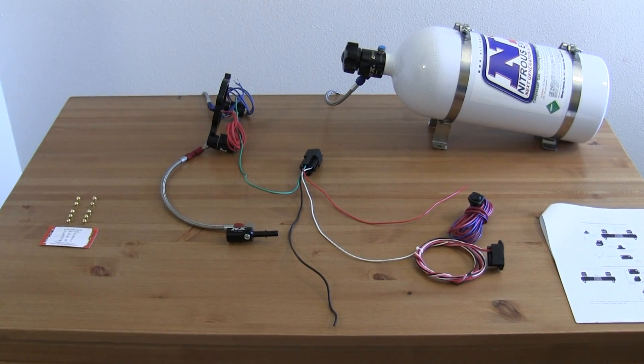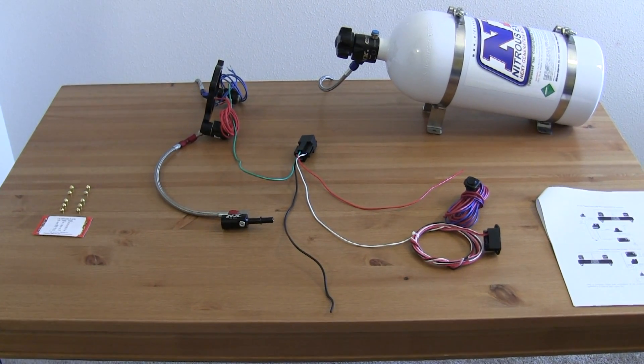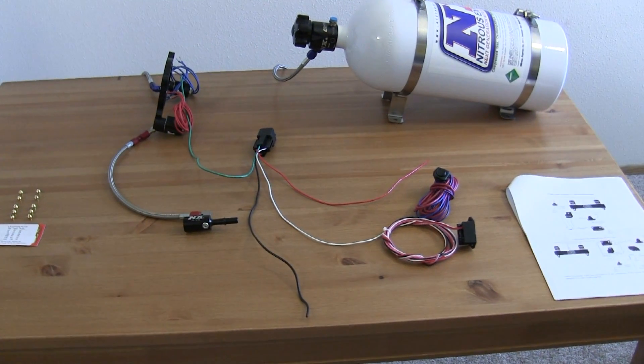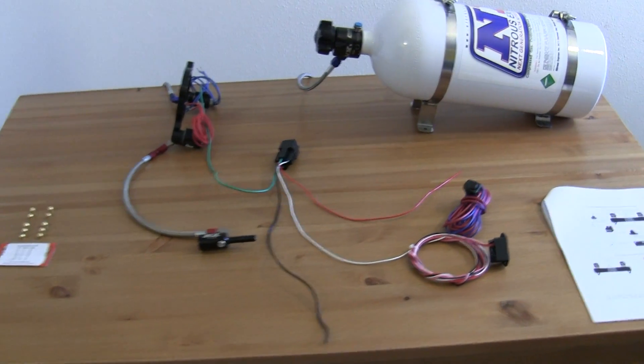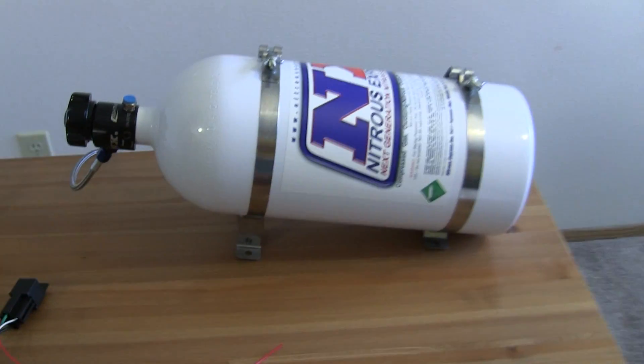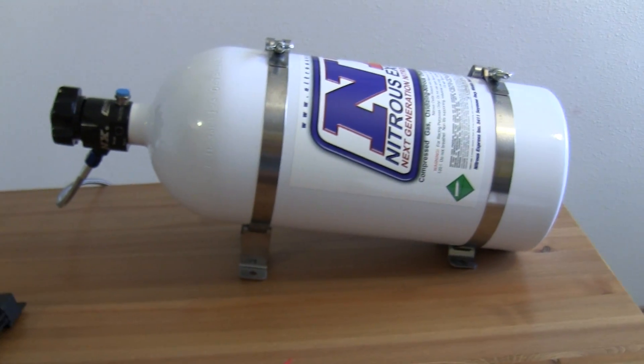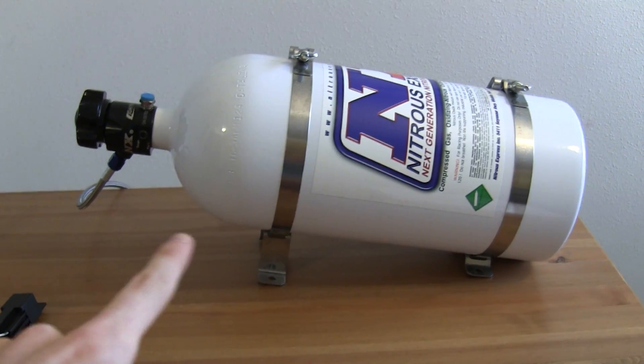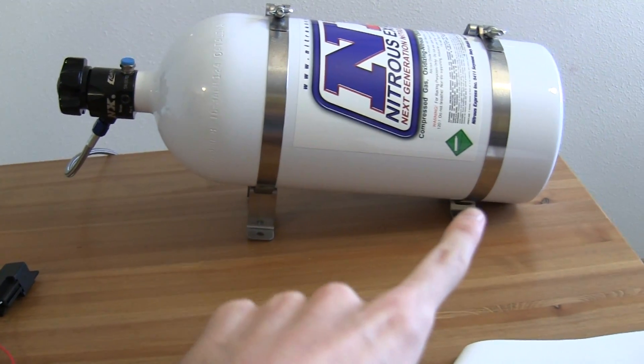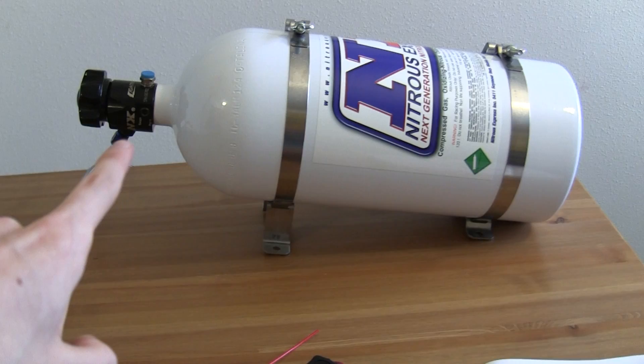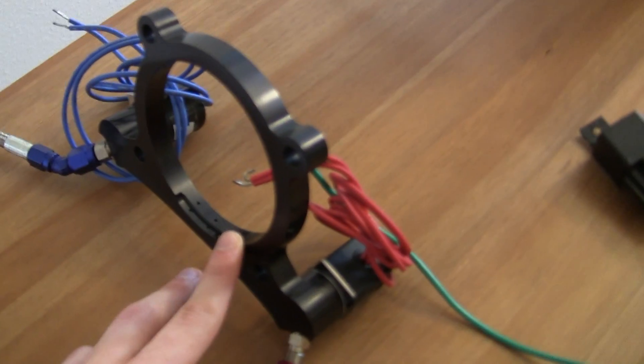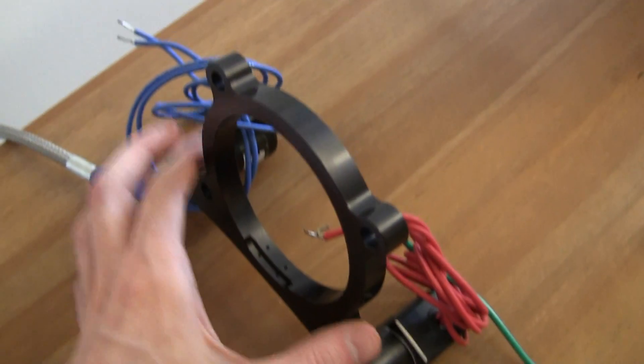So here we have our full nitrous kit, and we're just going to start at the bottle and work our way up and just check out the different components, see how they all work together to increase horsepower. So starting with the bottle, you're going to have these mounts, and it's going to be mounted somewhere in your car, as I've shown here, with the bottom of the bottle lower than the top, reason being there's a siphon down here, which is going to be pulling the liquid nitrous and sending it to this line, which will then come to your plate sandwiched between the throttle body and the intake manifold.